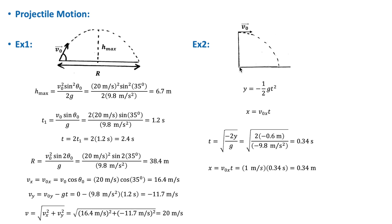We set x₀ = 0 and y₀ = 0 at the initial point. Since the initial velocity has only an x component, the y component of the initial velocity is zero. We can write y = −½g t² because v₀ᵧ = 0.